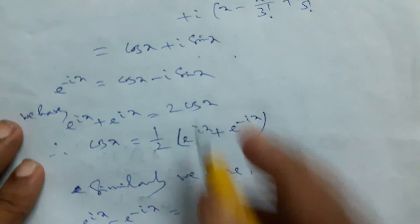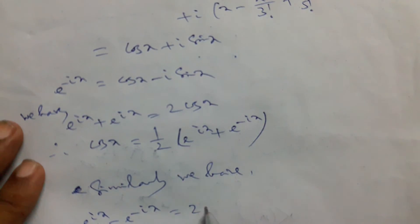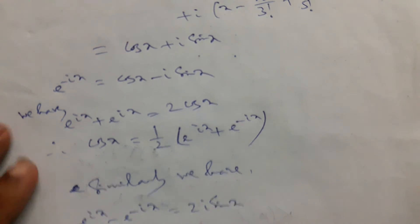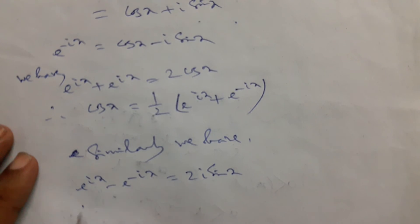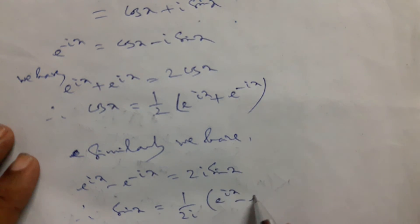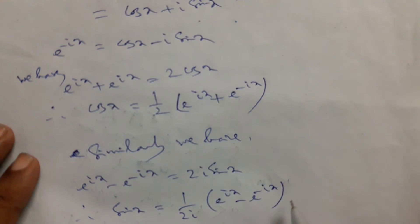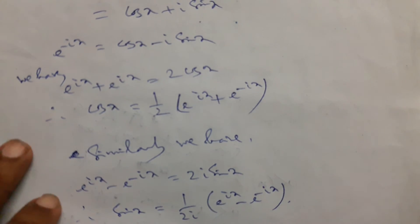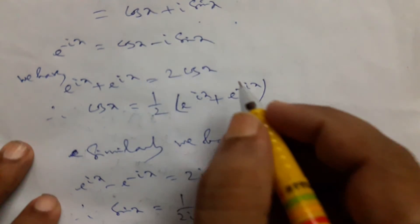Subtracting the two results gives e to the power ix minus e to the power minus ix equals 2i sin x, so sin x equals 1 over 2i times e to the power ix minus e to the power minus ix.